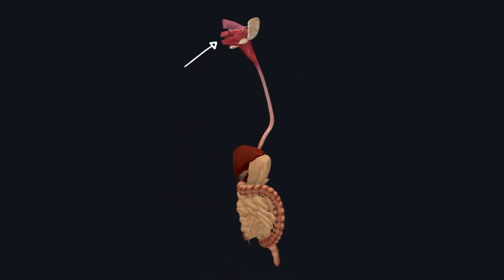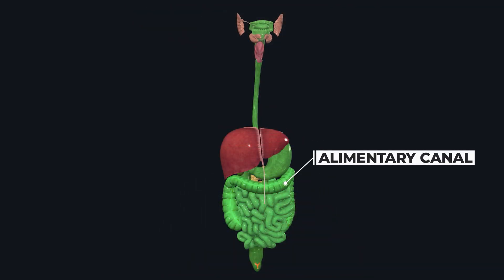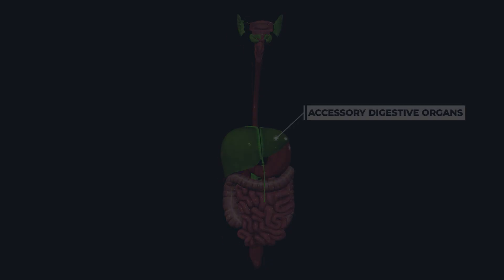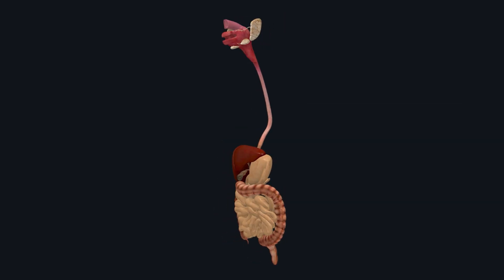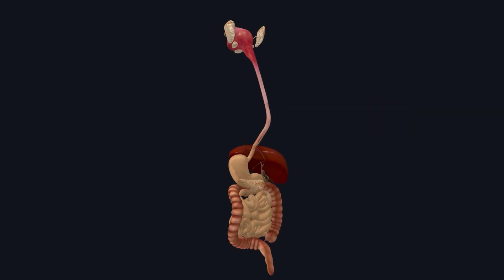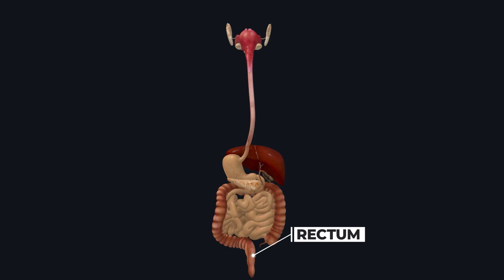The digestive system starts from our mouth and extends to the anus. This system consists of two main parts: the alimentary canal and accessory digestive organs. The alimentary canal includes the oral cavity, pharynx, esophagus, stomach, small intestine, large intestine, rectum, and anus.